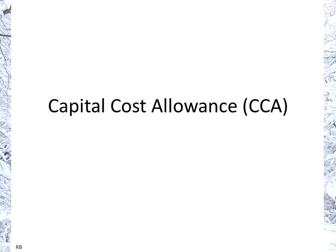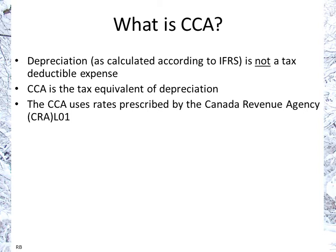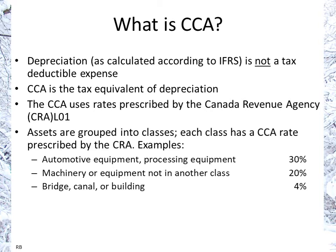Welcome to a presentation on capital cost allowance. First of all, what is capital cost allowance? As we know, depreciation as calculated according to IFRS is not a tax-deductible expense. Rather, CCA — the capital cost allowance — is the tax equivalent of depreciation. It uses rates that are prescribed by the Canada Revenue Agency, and assets are grouped into classes, each class having its own rate.